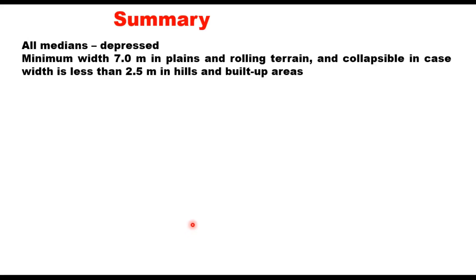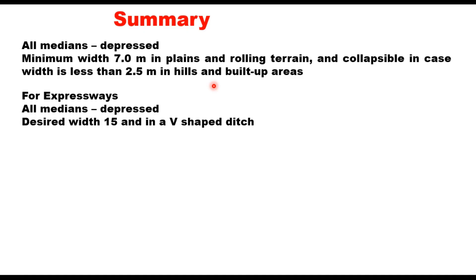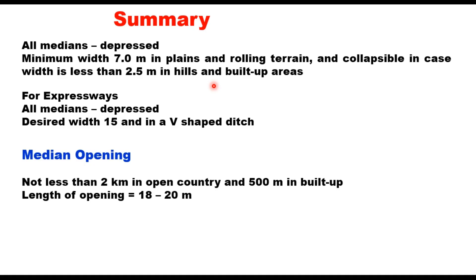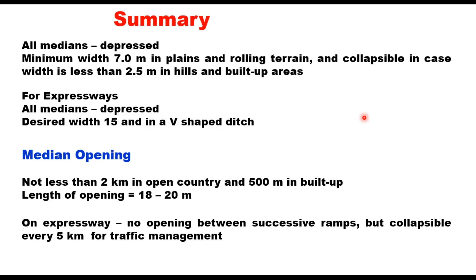To summarize: all medians on multi-lane highways and expressways will be depressed. Median width will be 7 meters in plains and rolling terrain, and collapsible in case width is less than 2.5 meters in hills or built-up areas. For expressways, the desired width is 15 meters in a V-shaped ditch type to serve as a drain for rainwater. Median openings should not be less than 2 kilometers apart in open country and 500 meters in built-up areas, with length of opening being 18 to 20 meters. On expressways, no opening between successive ramps, but collapsible openings can be provided every 5 kilometers for traffic management. These are the provisions given in IRC 73-2023.